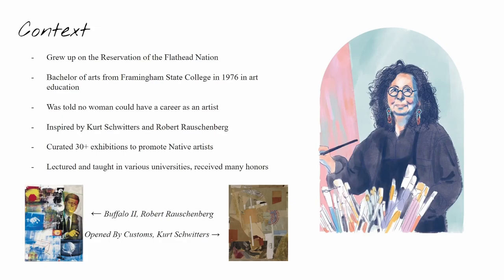Smith was born and raised on the reservation of the Flathead Nation in 1940 as one of 11 siblings. Her father was a horse trader and a rodeo rider. Her name, Quick-to-See, was given to her by her grandmother after she showed her ability to quickly grasp concepts. She took photographs of herself and was interested in being an artist throughout her childhood. She got a bachelor's in arts education in 1967 from Framingham State College. She was always being told that as a woman, she could never succeed in art, so she chose education instead.